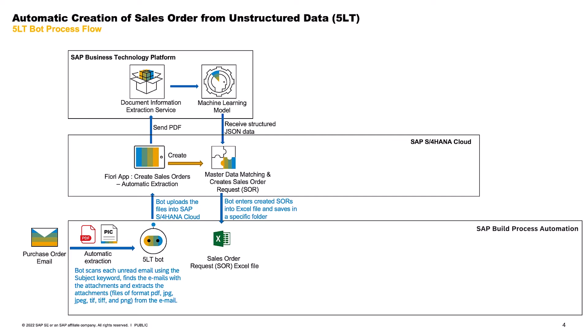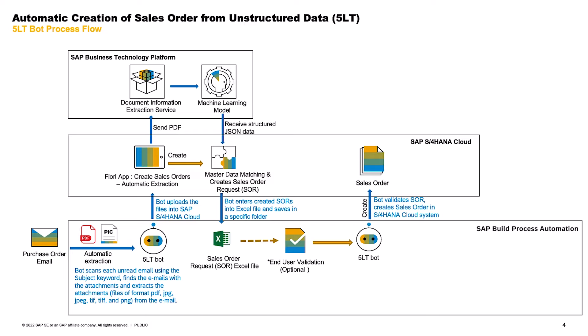Once this is complete, the bot creates an Excel file with the sales order request numbers and saves this file into a folder on the user's local desktop. The end user can then validate the information contained in the sales order requests and make sure that the information is correct. Next, in Scenario 2, the bot fetches the Excel files containing the sales order request numbers and uses this information to convert the sales order requests to sales orders in SAP S/4HANA. At the very end, the bot sends an email to stakeholders with the Bot Execution Status Report and attachments.